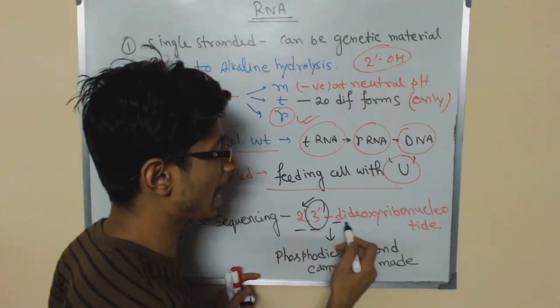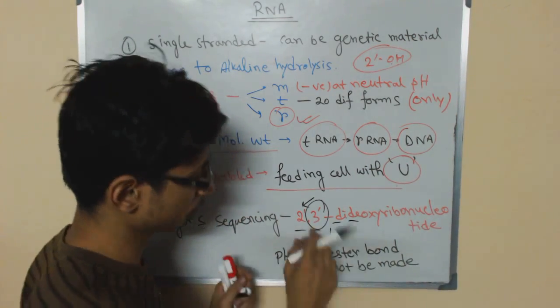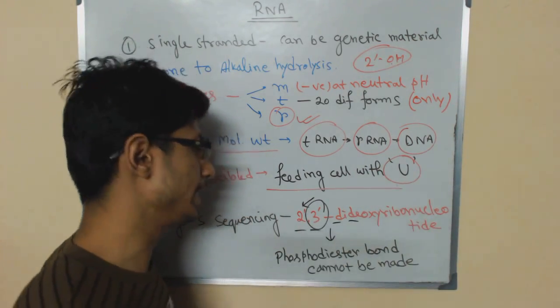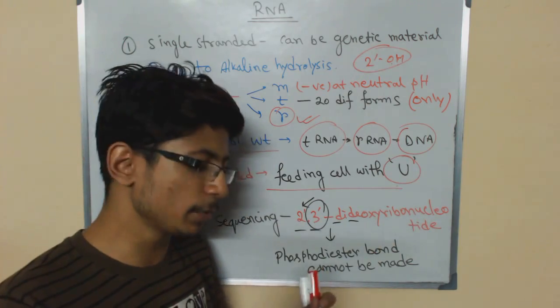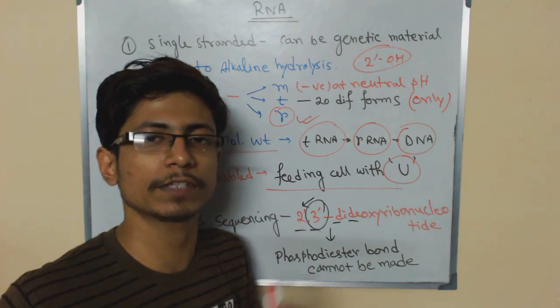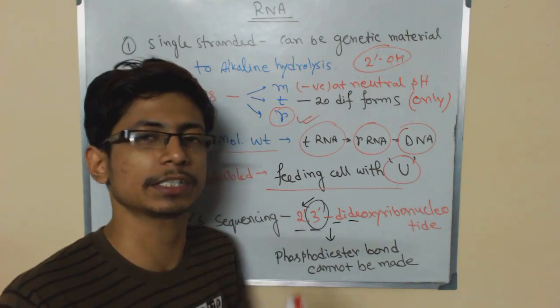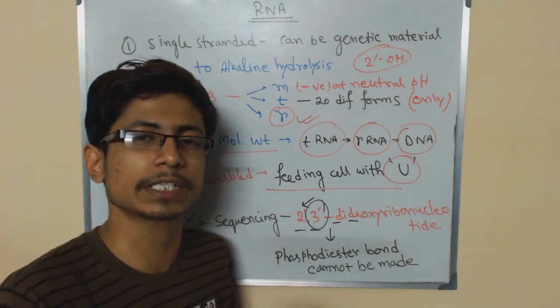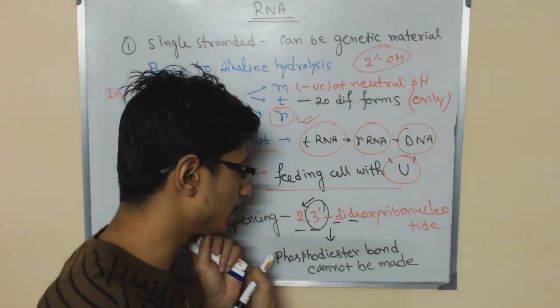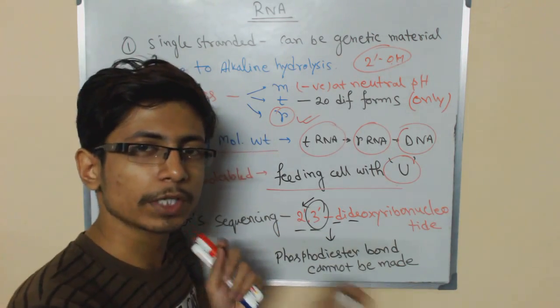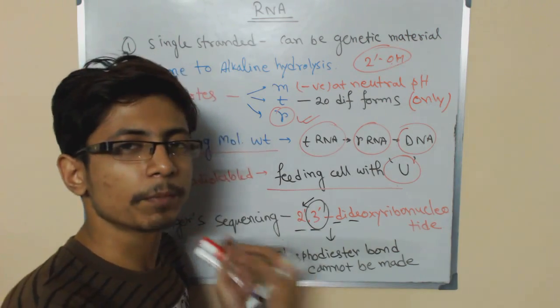That gives us 2'3' dideoxy ribonucleotide. If we have this ribonucleotide, it will terminate the production of the chain, it will terminate the synthesis and attachment of the new nucleotide sequence, and it will terminate the elongation process of nucleotide synthesis.